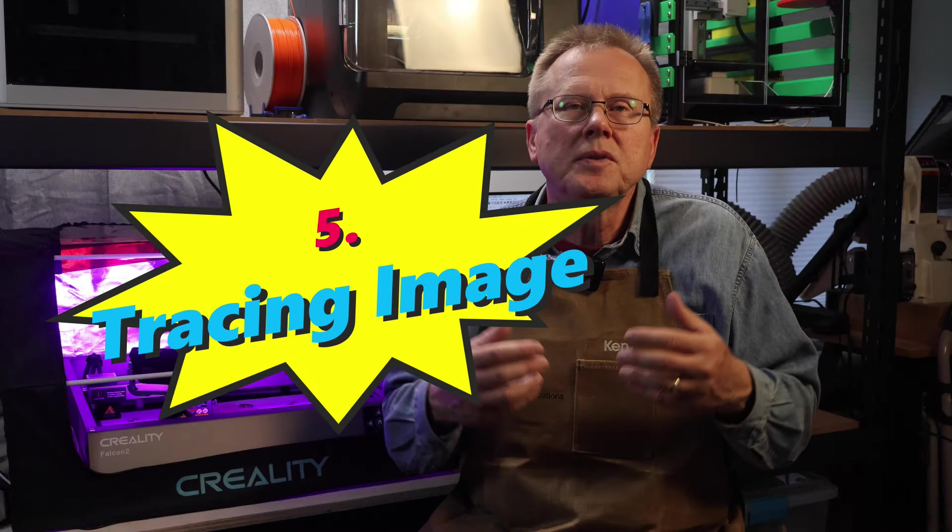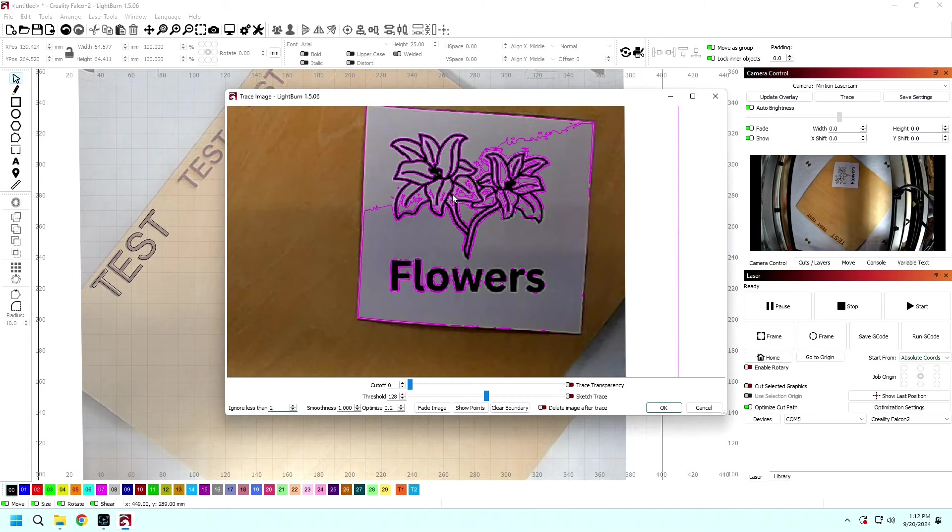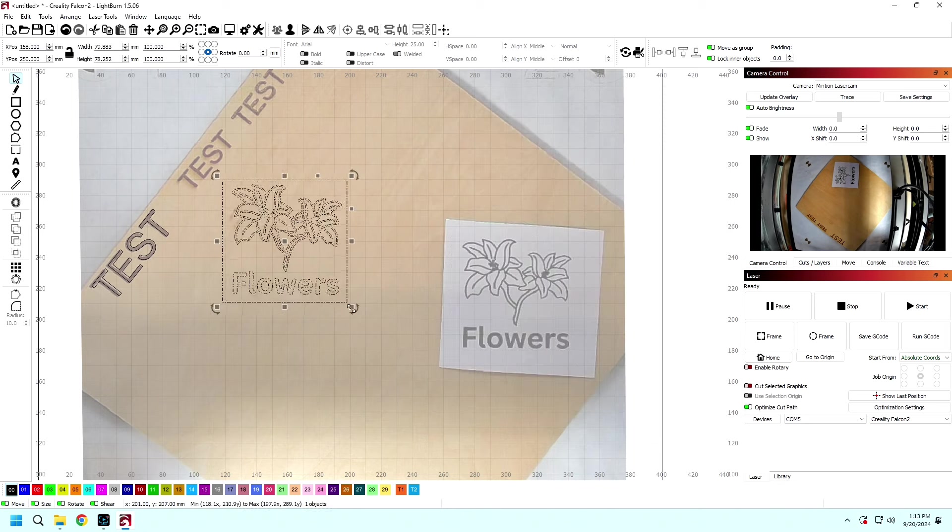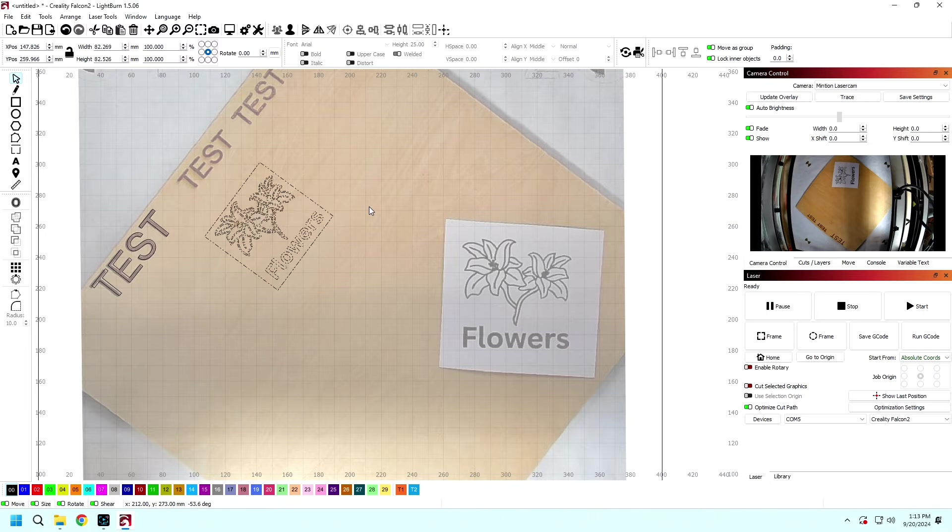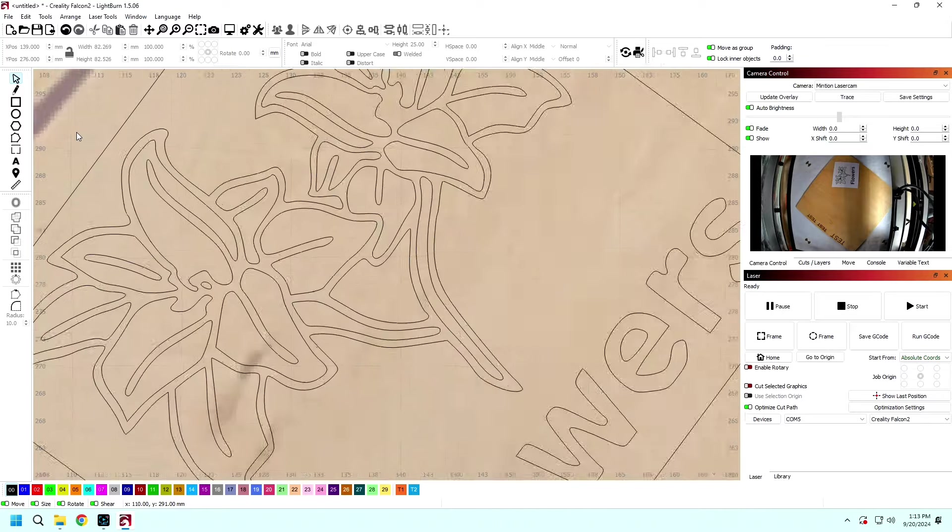Another feature of the Minchian webcam and Lightburn software is the tracing image function. Place a physical item to trace in the work area. Under Camera Control, click Trace. The whole work area will be traced. So to focus only on the image you are interested in, draw a rectangle around it. Then turn the Sketch Trace button and hit OK. Move the traced image to the workpiece where you want it to be engraved. Then hit Start and your laser will engrave your image.